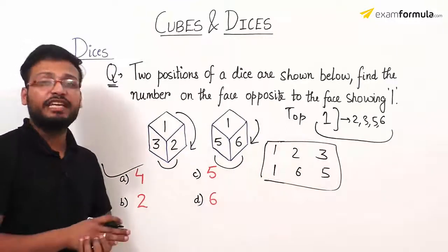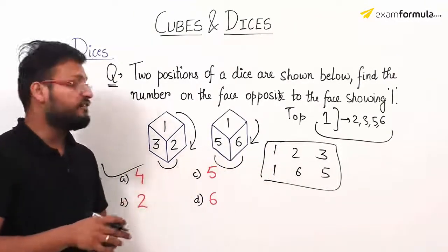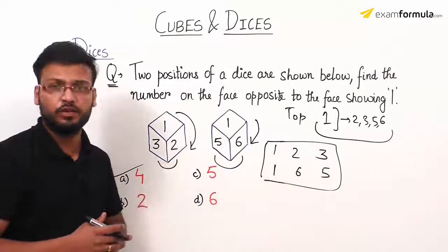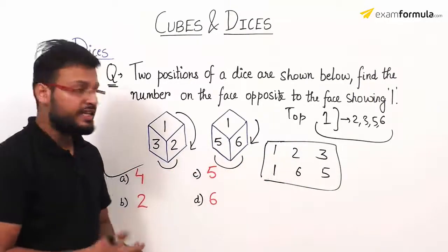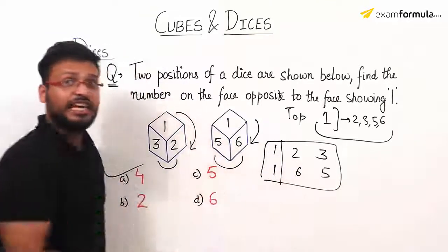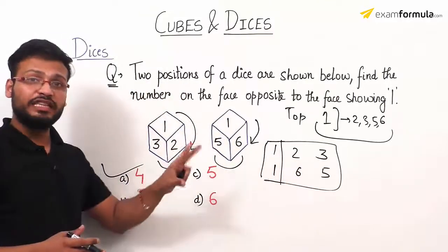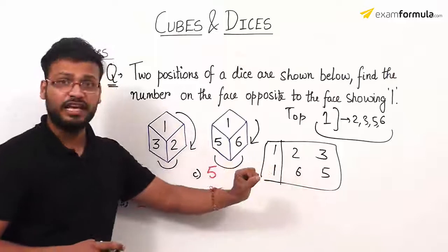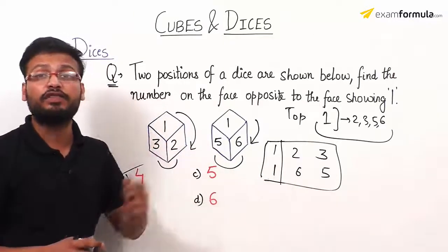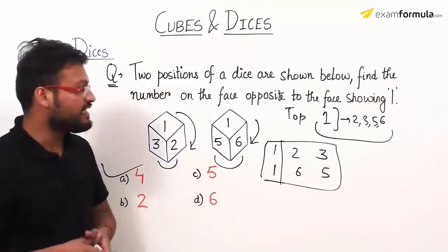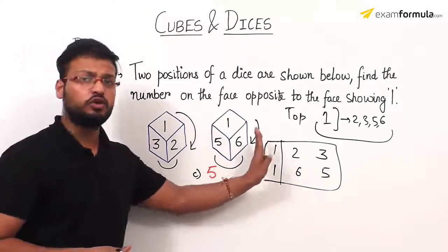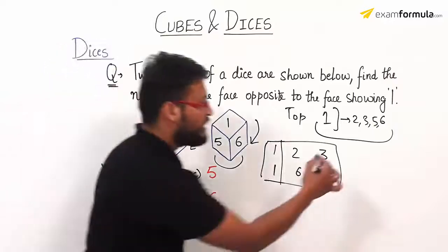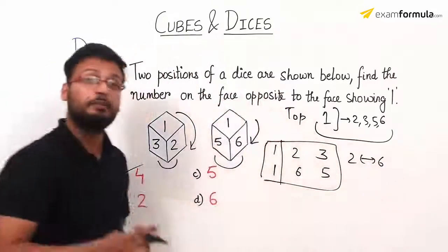Next, you have to verify whether any particular number is repeating in the same column — a vertical line. Here, number 1 repeats one below the other. So the trick is applicable. Since number 1 is repeated, ignore it. The remaining numbers pair up as opposite faces: 2 and 6 will be on opposite faces.